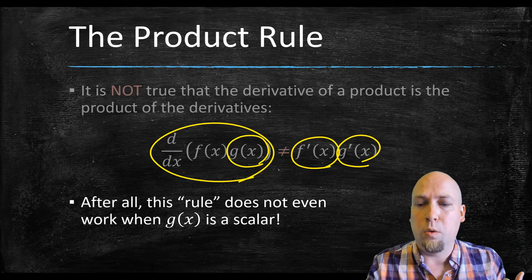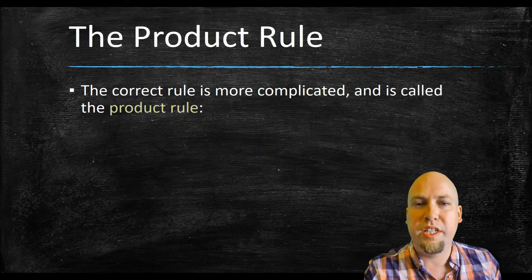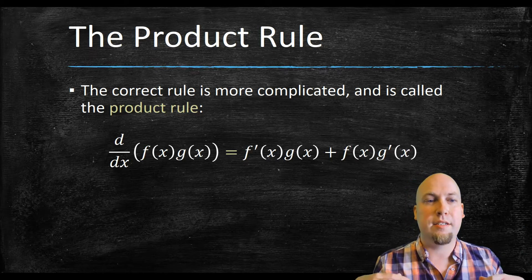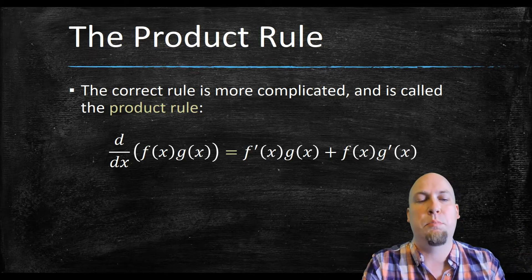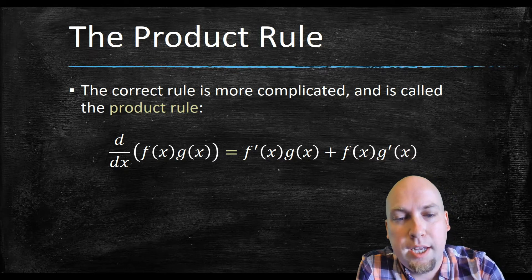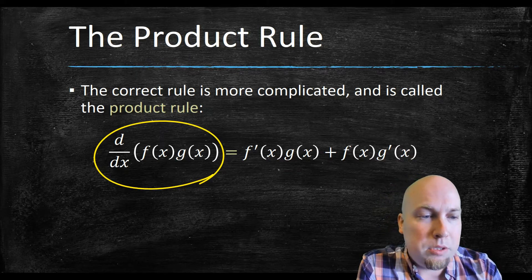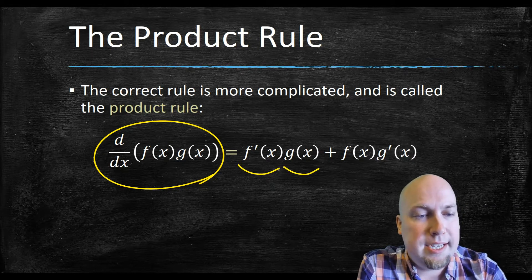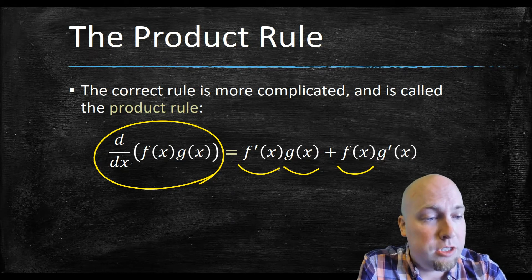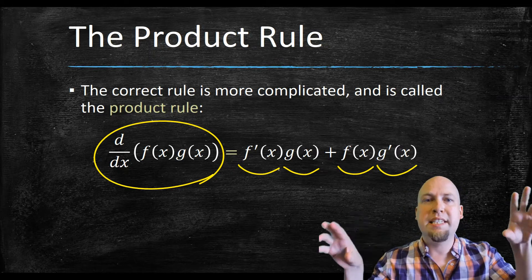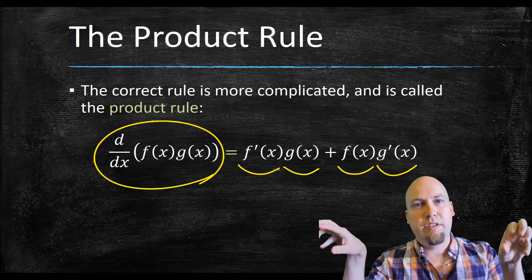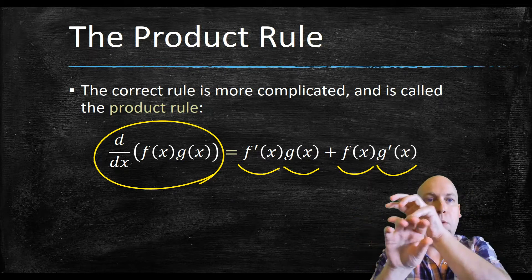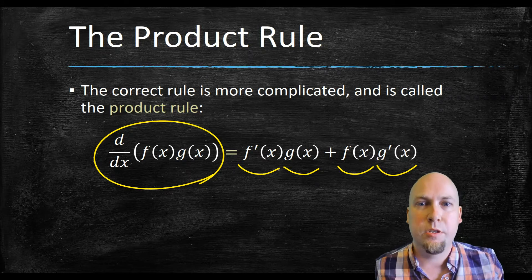So what's the correct rule — the correct way to take the derivative of a product of two functions? That's what the product rule is. The derivative of the product of two functions equals the derivative of the first function times the second function, plus the first function times the derivative of the second function. You're mixing and matching, taking a derivative of one function and not the other, and then adding up those two products.